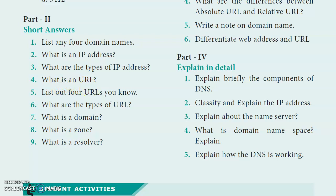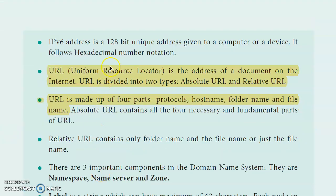What is a URL? URL stands for Uniform Resource Locator. It is the address of a document on the internet. A URL has two types: Absolute URL and Relative URL. A URL contains three parts: host name, folder name, and file name.